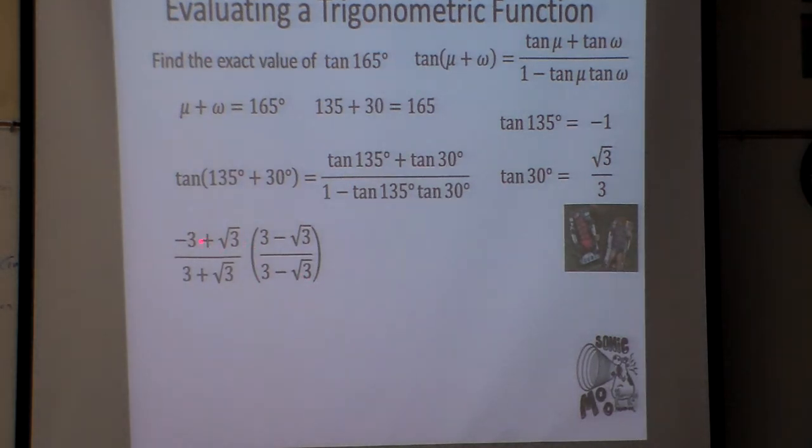And now I'm going to FOIL the top. So negative 3 times 3 is negative 9. Negative 3 times the outside term is going to be a positive 3 square root of 3. That square root of 3 times square root of 3 is another positive square root of 3. And positive square root of 3 minus square root of 3 is going to be minus the square root of 9.